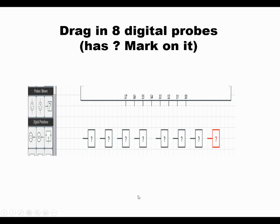Next thing you got to find is 8 digital probes. So they're under where it says probes and meters. That's the thing on the far right. They have a question mark in it. So try getting 8 of those.